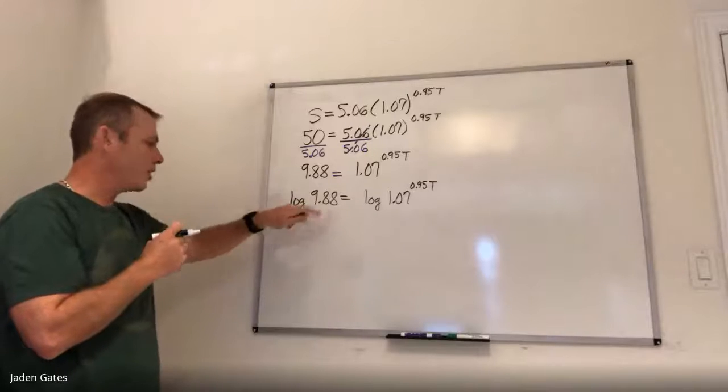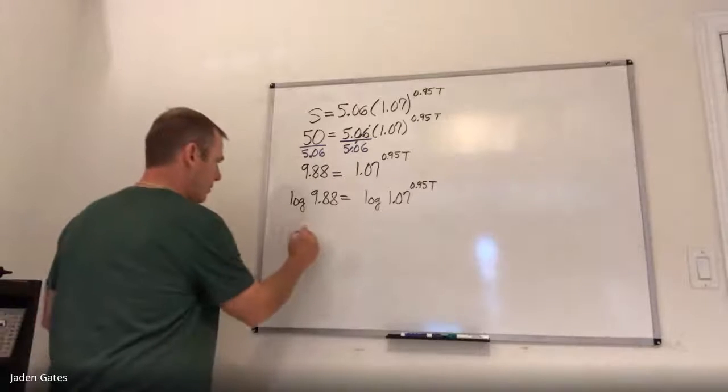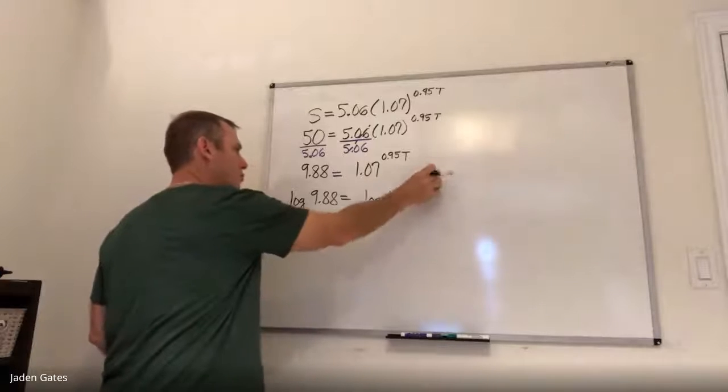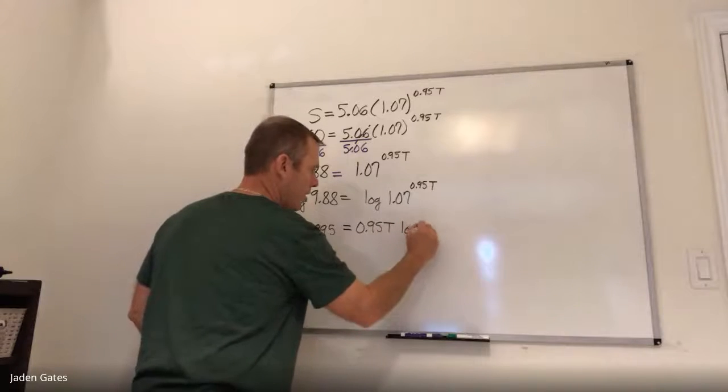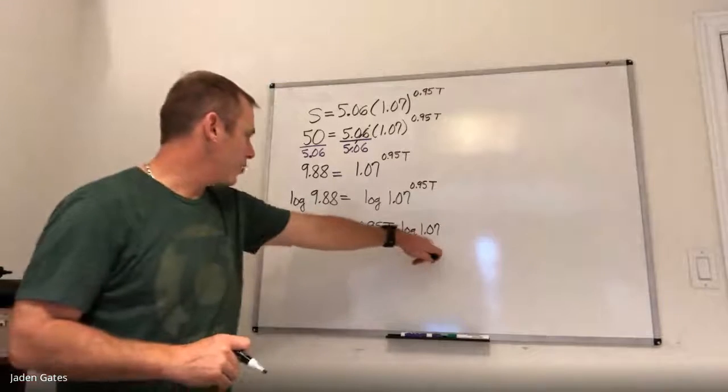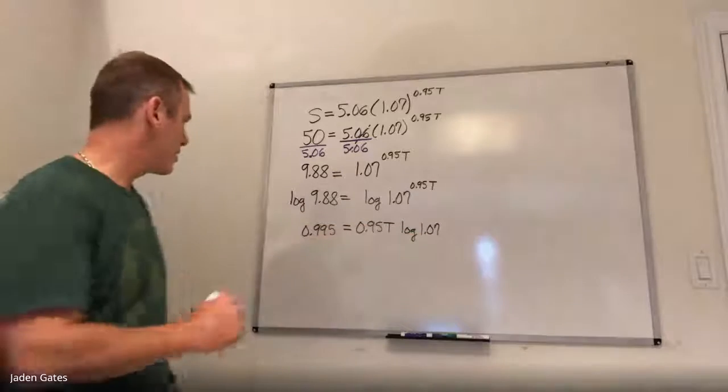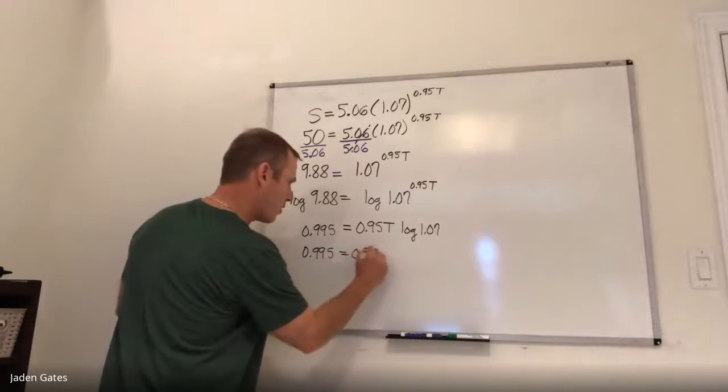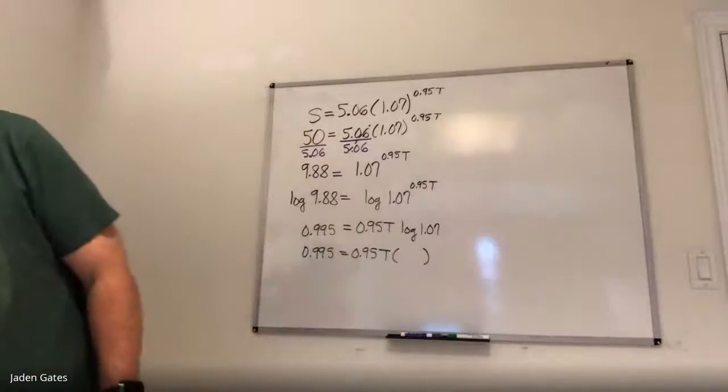But again, anytime I can figure and not something else like the log at 9.88, which is 0.995. Again, using my log rule, bringing this 0.95 T down to the other side and I still have this log 1.07. All right. So again, I like to figure out my numbers. If I do that log 1.07, get that figured out. So log function takes big numbers, makes them smaller. So that number is going to be really small. In fact, it is 0.03.